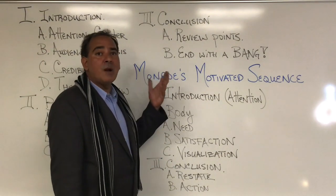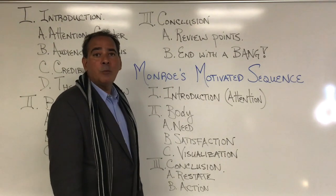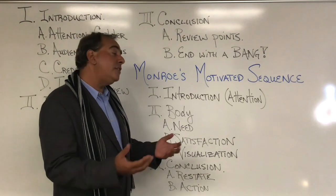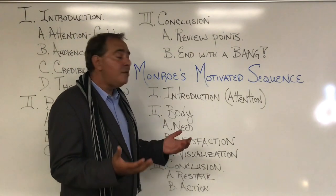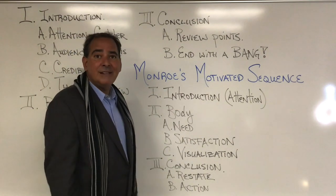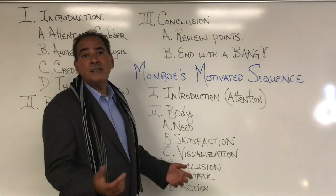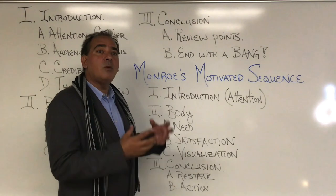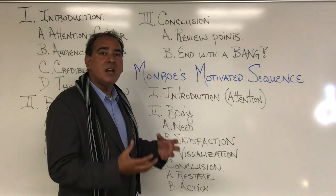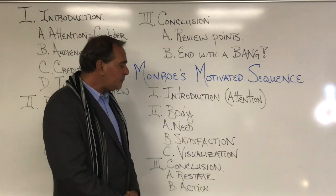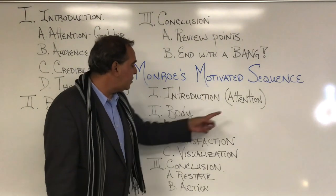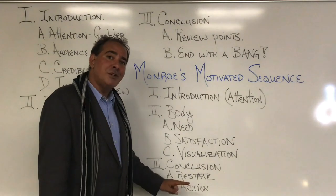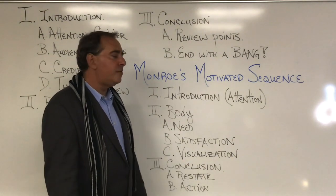Most of you will probably do a problem-cause-solution framework — it's pretty straightforward, easy to research, and gets you through. But some of you might want to kick it up a notch and move to Monroe's motivated sequence. Monroe was a professor at Purdue University, and in the 1930s he tried to figure out a way to always structure a speech to make it effective as a means of persuasion. He came up with the attention, need, satisfaction, visualization, action model — what we call Monroe's motivated sequence.